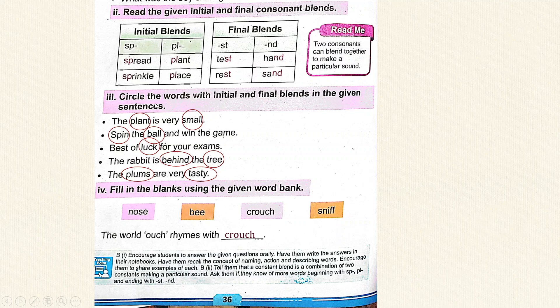Circle the words with initial and final blends in the given sentences. The plant is very small — in this sentence, plant and small are circled. You have to circle these words. Spin the ball and win the game — in this sentence, spin and ball are initial blends, and also final blends.